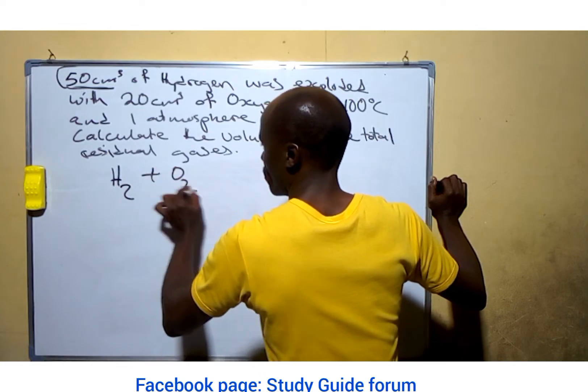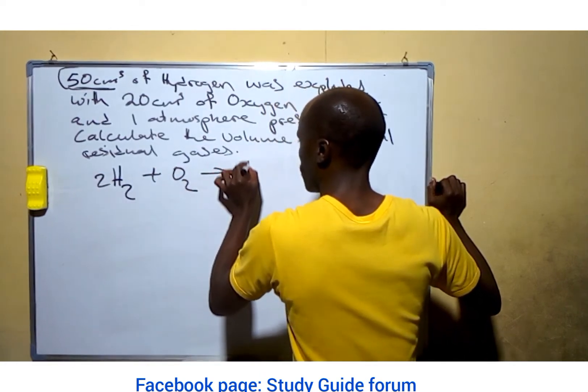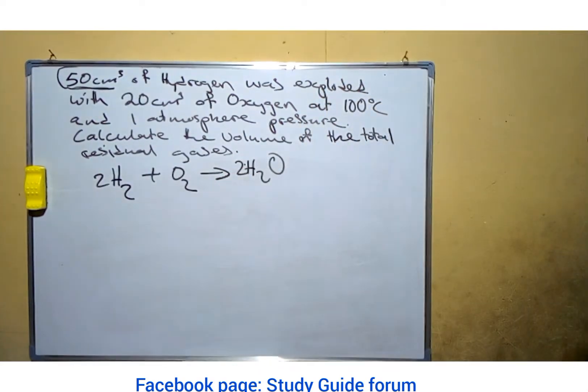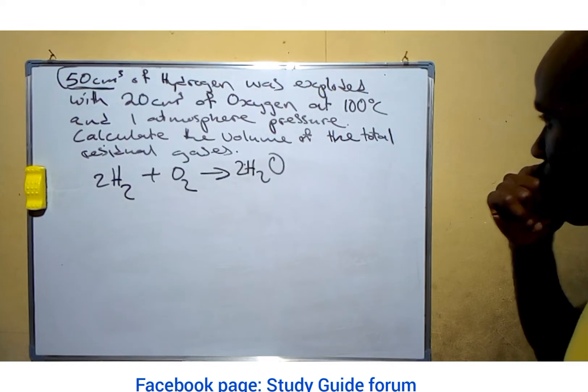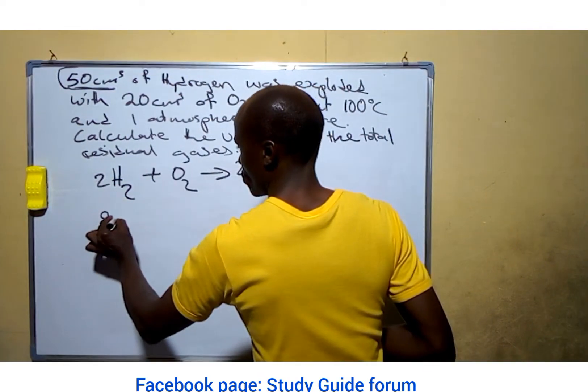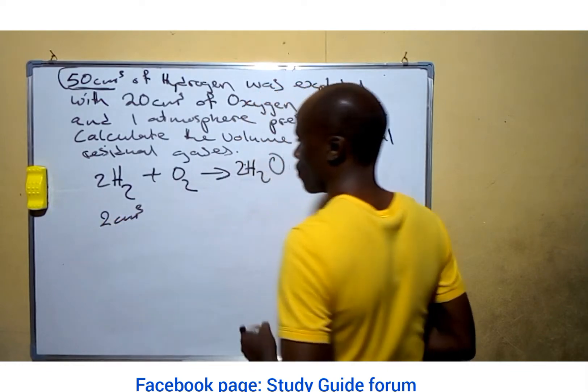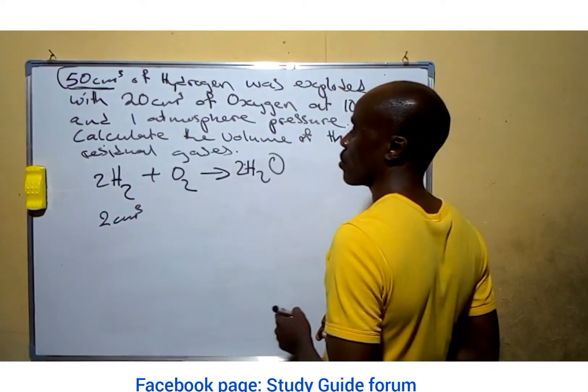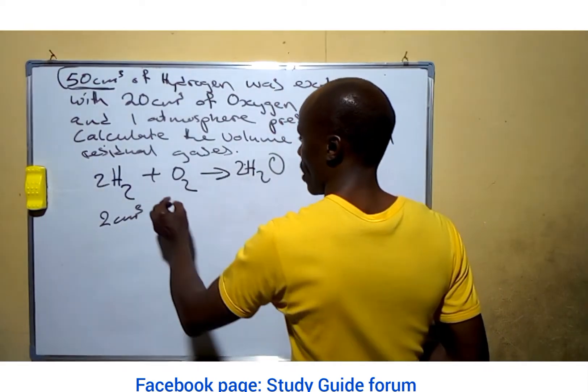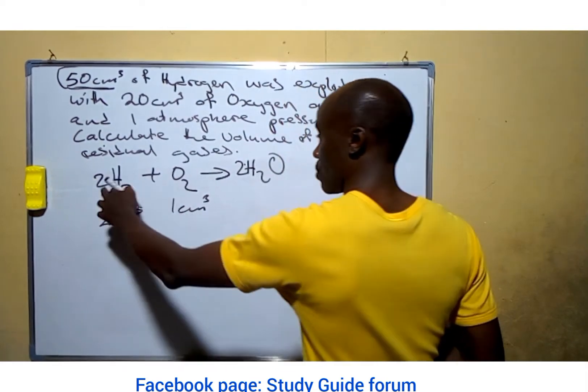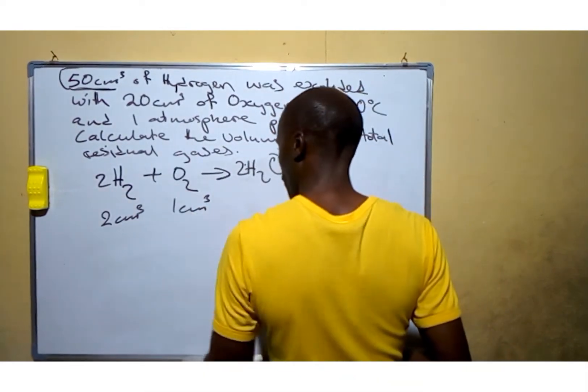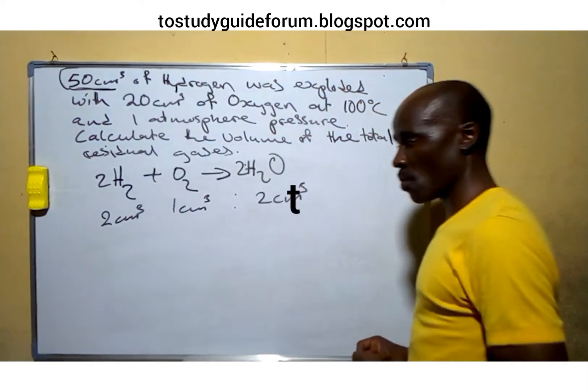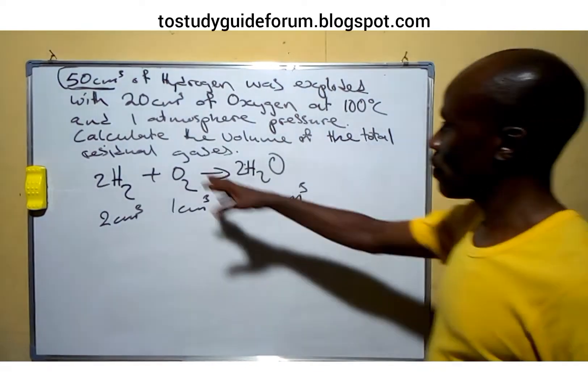Now let's look at the chemical equation involved in this reaction. From this chemical equation, what you can see here is that 2 cm³ of hydrogen combined with 1 cm³ of oxygen will give us 2 cm³ of water.